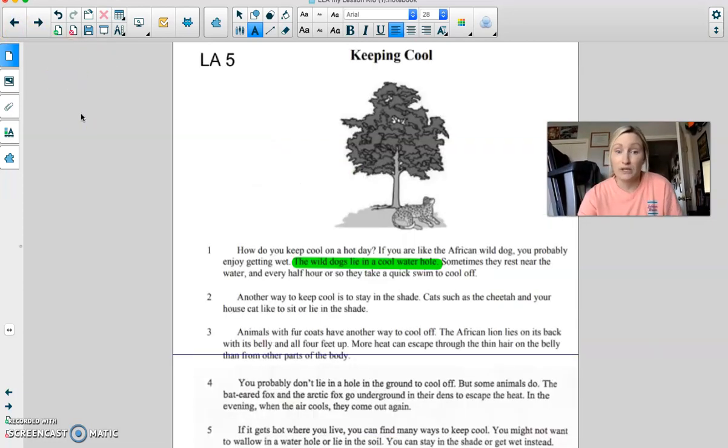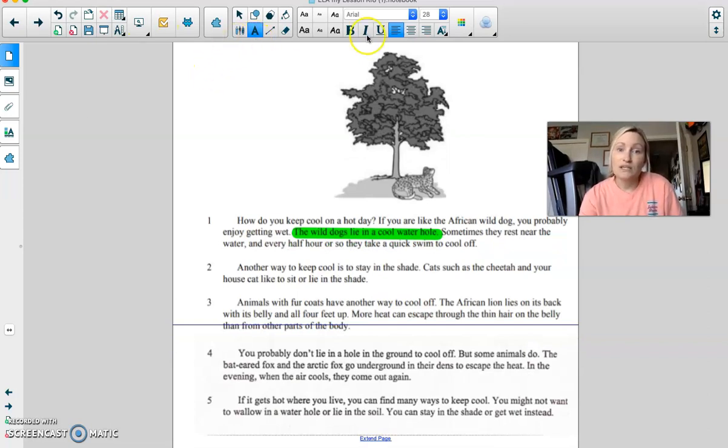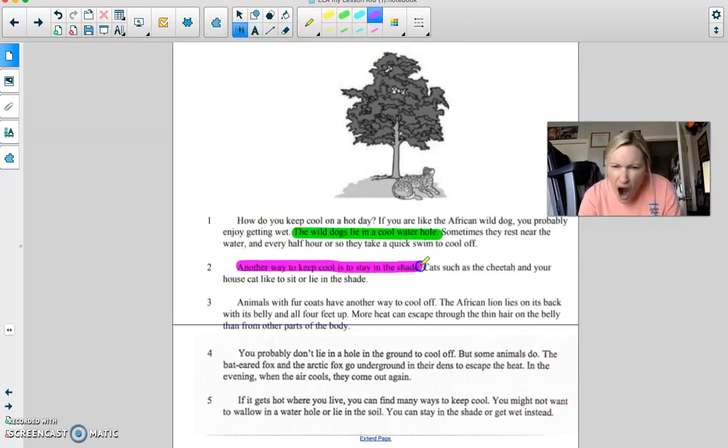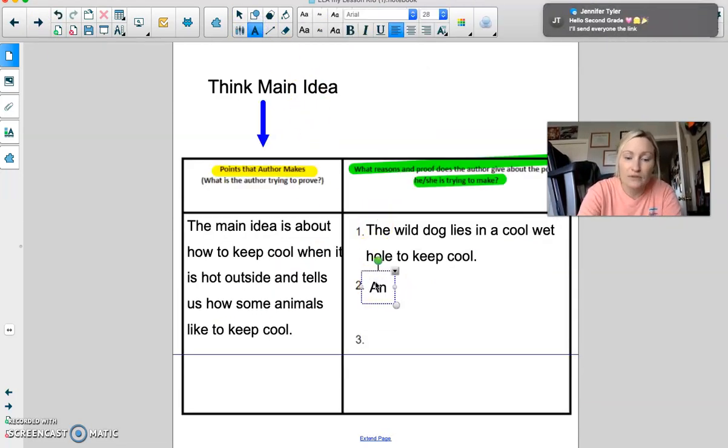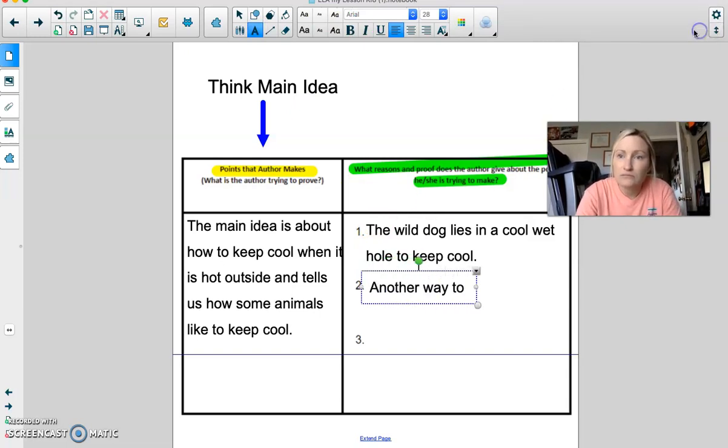All right. Let's find another one. There's quite a few in here. Oh, look at this. Another way to keep cool is to stay in the shade. Let's do a different color. I know if I'm outside with my kid and he's running all over the place, I go stand under a tree to cool off. So, another way to keep cool is to stay in the shade. We would write that. Another way to keep cool is to stay in the shade.